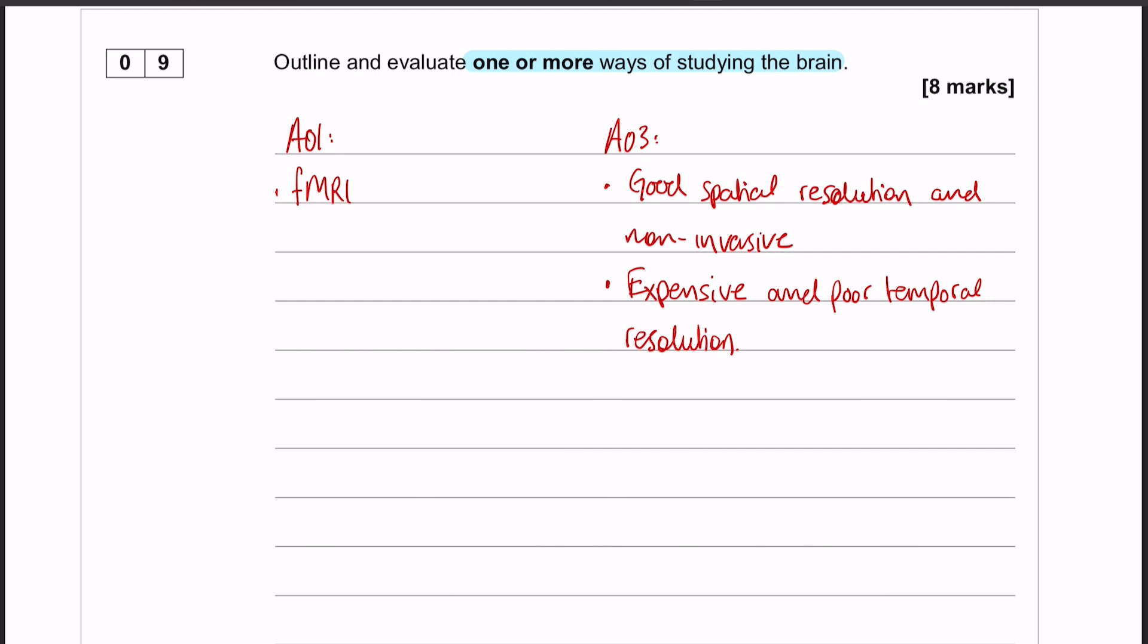Okay, so question number nine is the last question in the biopsychology topic, and it is an eight-mark essay on outline and evaluate one or more ways of studying the brain. Now, when you get questions like this...